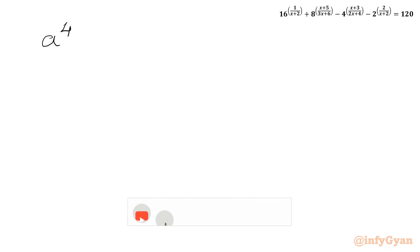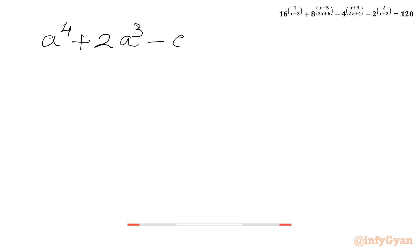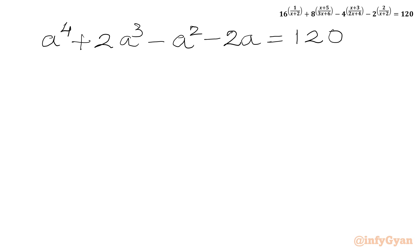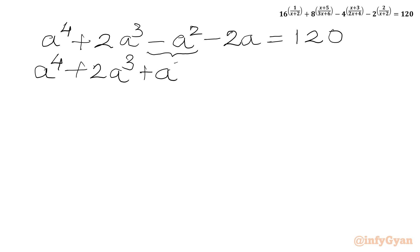Let me write the equation here: a power 4 plus 2a cubed minus a squared minus 2a equals to 120. I will use the method of factorization. I will write a power 4 plus 2a cubed, then this minus a squared can be written as plus a squared, so I need to write minus 2a squared. In total it is minus a squared minus 2a equals to 120.